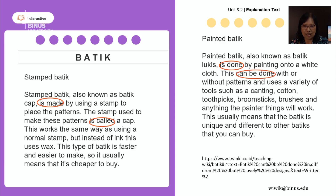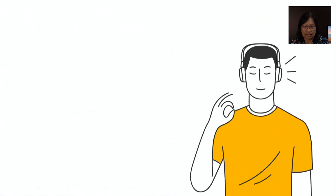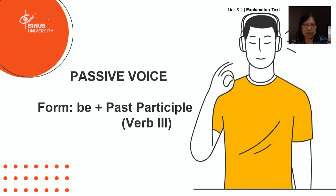If you use modals like 'can,' then you just put 'be' — so: can, be, then past participle. This is the form: be plus past participle. So if you want to write passive voice, you have to know the past participle of the verbs you use. It should be past participle — there is no other form.